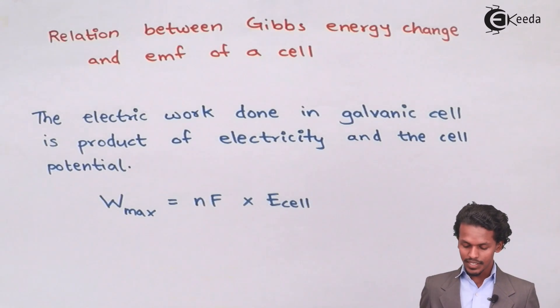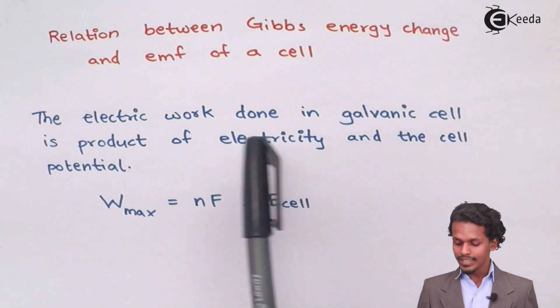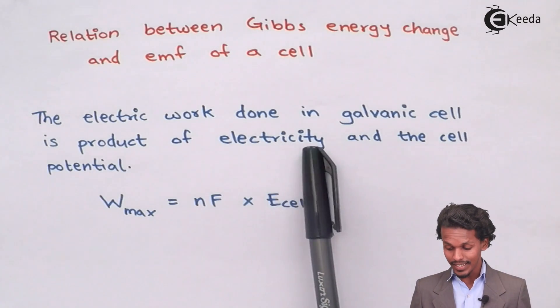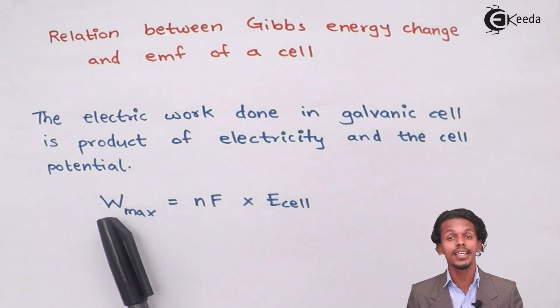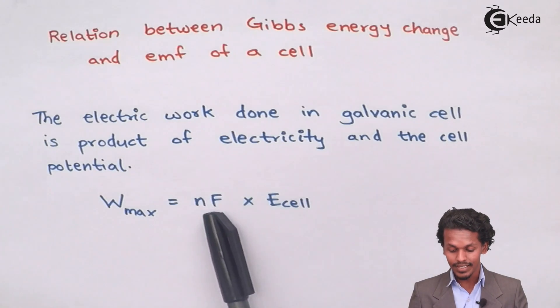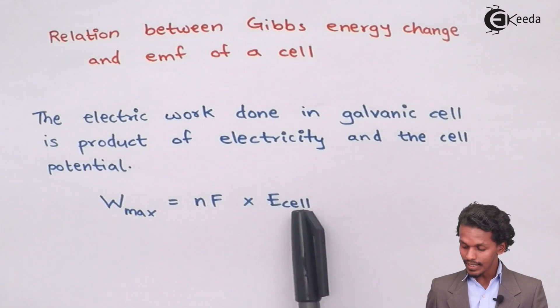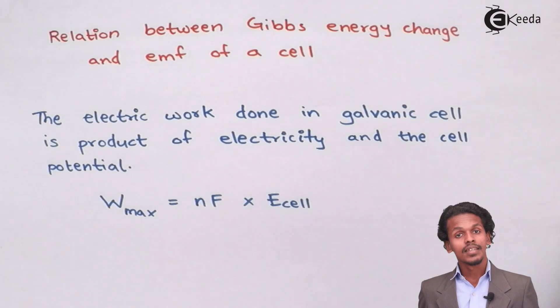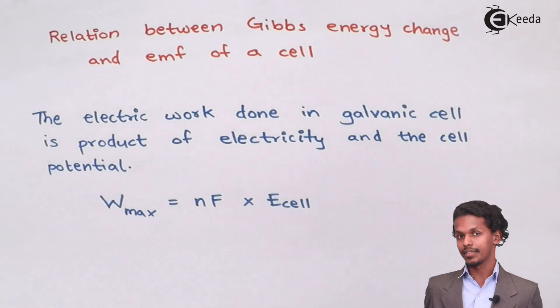The first is, since you know the electrical work done in a galvanic cell is nothing but the product of electricity and the cell potential. This will give us work as W max. So now let us move towards the next one.